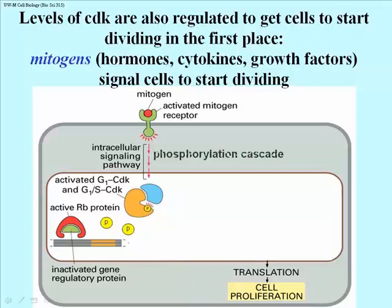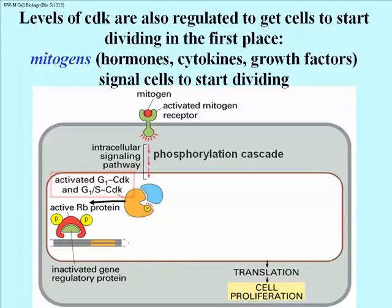You're looking at an example of a known signal transduction pathway that starts when a mitogen binds to a cell surface receptor, initiates a phosphorylation cascade, that then activates a number of cyclin-dependent kinases.